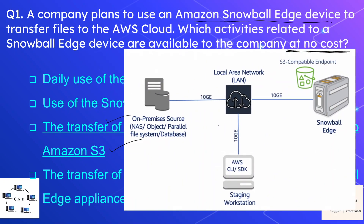The Snowball Edge device is a physical device you can use in your local area network to transfer files from your local storage to an AWS S3 bucket. This process involves no cost — transferring data from your local storage to AWS using the Snowball Edge device is free of charge.